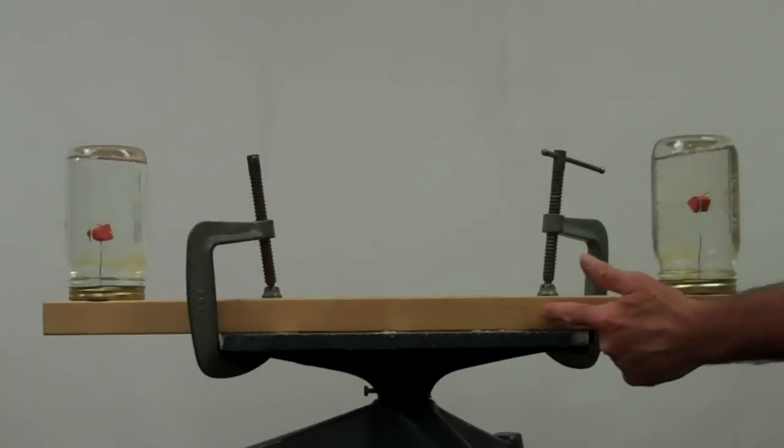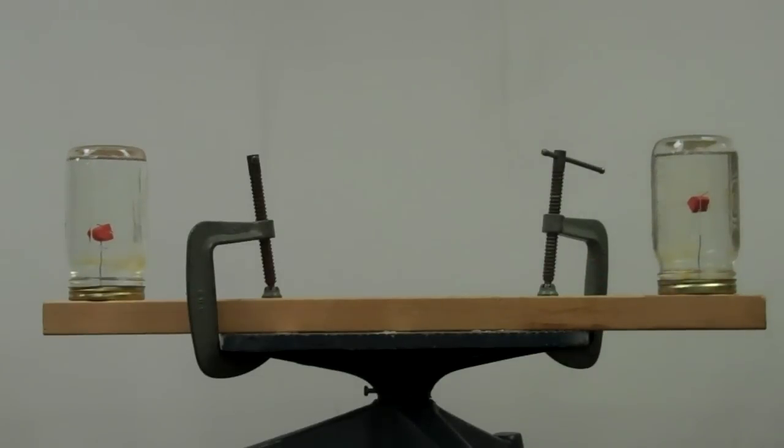Clamped down to the turntable is a wooden 2x4. Secured to the wooden 2x4 are two glass jars. These glass jars are filled with water.